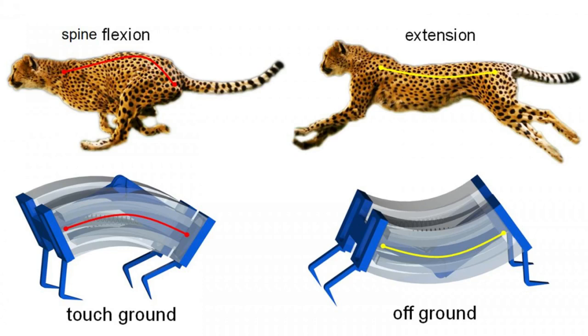These include manipulation of delicate objects, navigation through confined space, and actuation with multiple degrees of freedom. Despite these advances, it remains challenging to achieve high performance in soft robots.